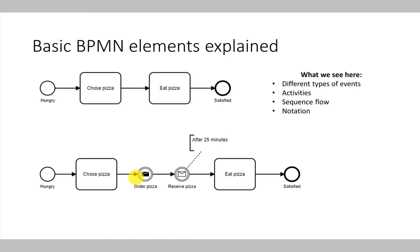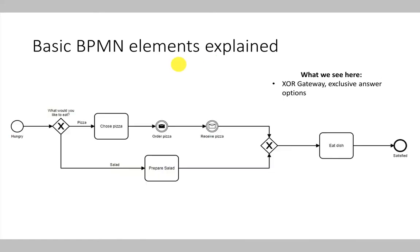Using small icons inside the events, we can further annotate what the event is about. For example, the black letter symbol represents information being sent, and the white letter symbol represents information being received. It's also possible to annotate different shape types with additional information — for example, we expect that the pizza is received after 25 minutes. These are the basic building blocks, and we can already model basic processes with them, though our processes are currently quite linear. Usually we need the possibility to model different process paths, and that's what I'll explain next.